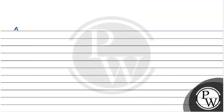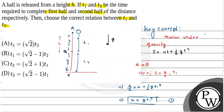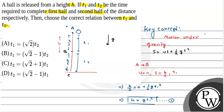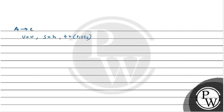Along the path A to C, covering the full distance h, the initial velocity is 0. The total time to travel from point A to point C is t1 plus t2. So, h equals half of g times t1 plus t2, whole squared. This is equation 2.